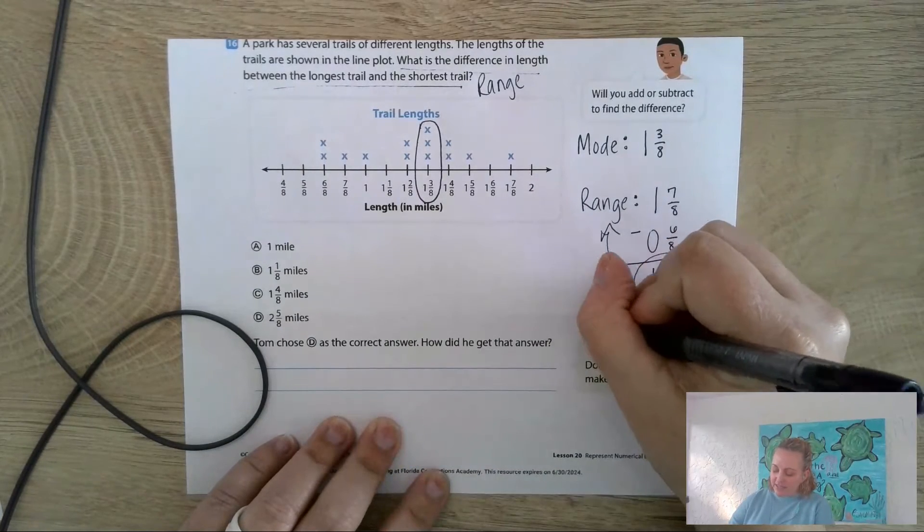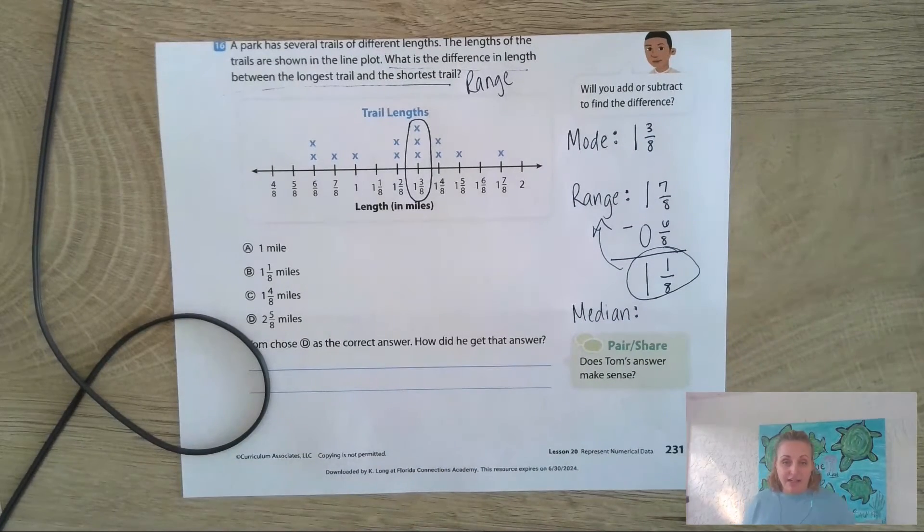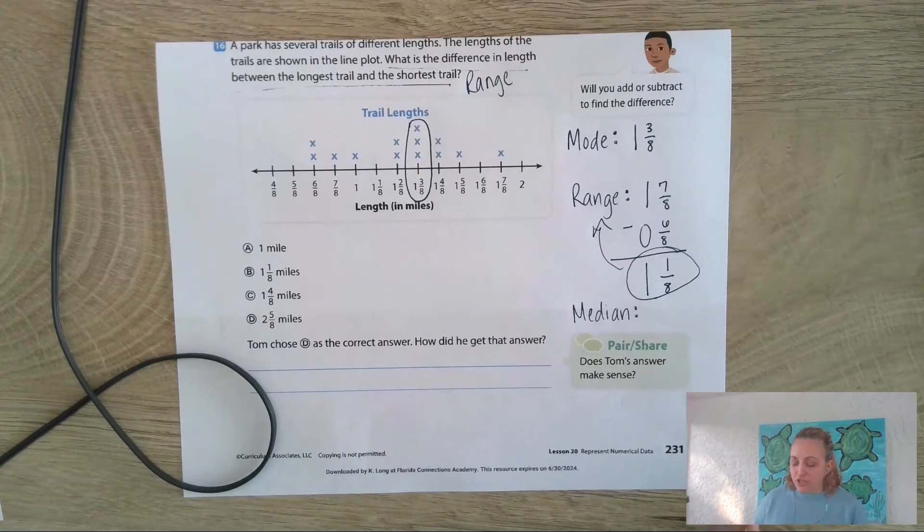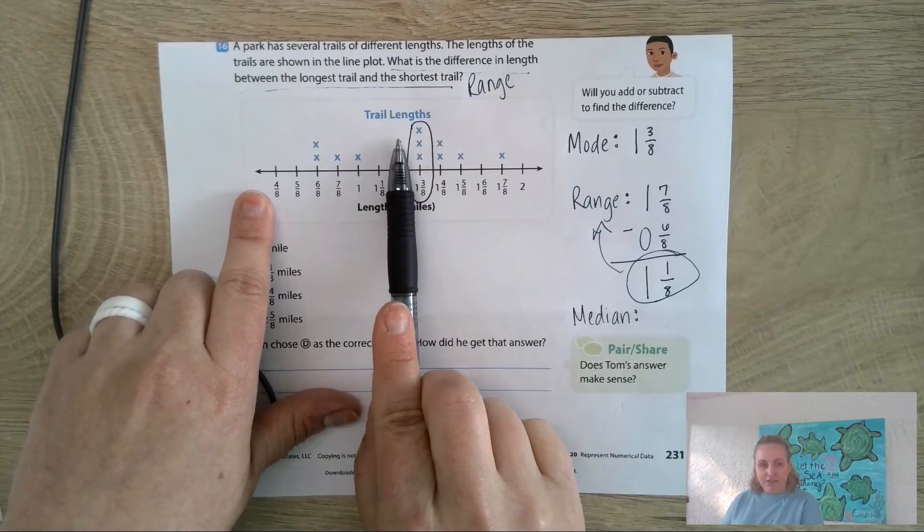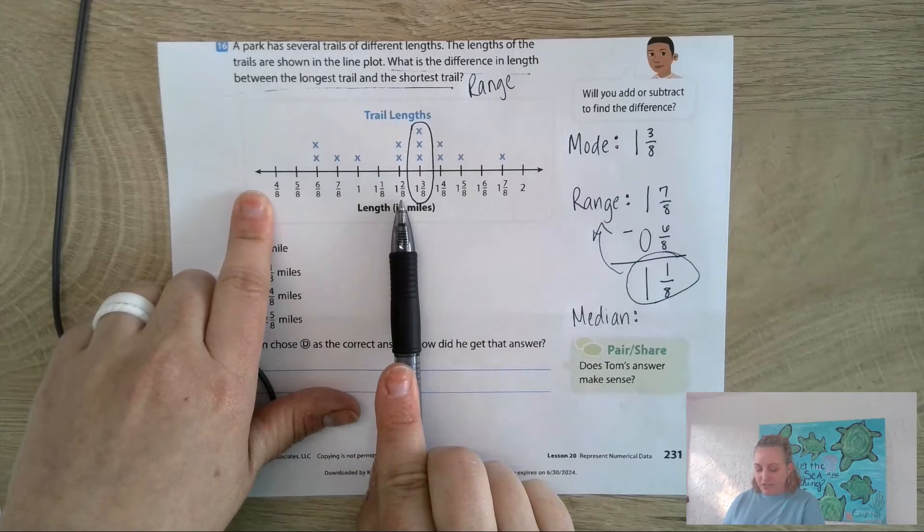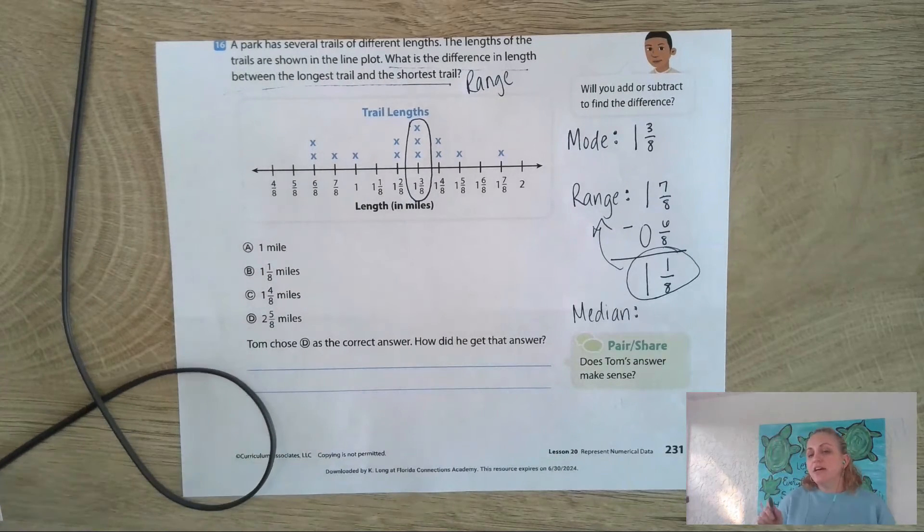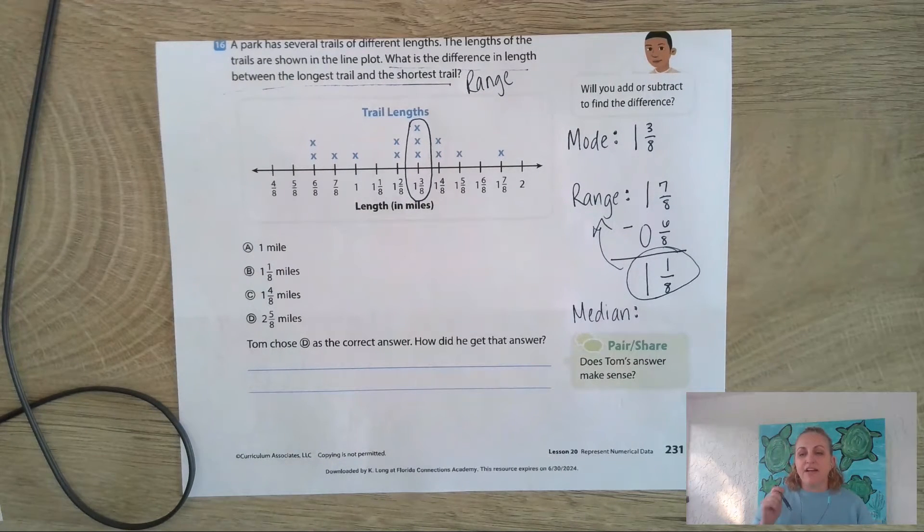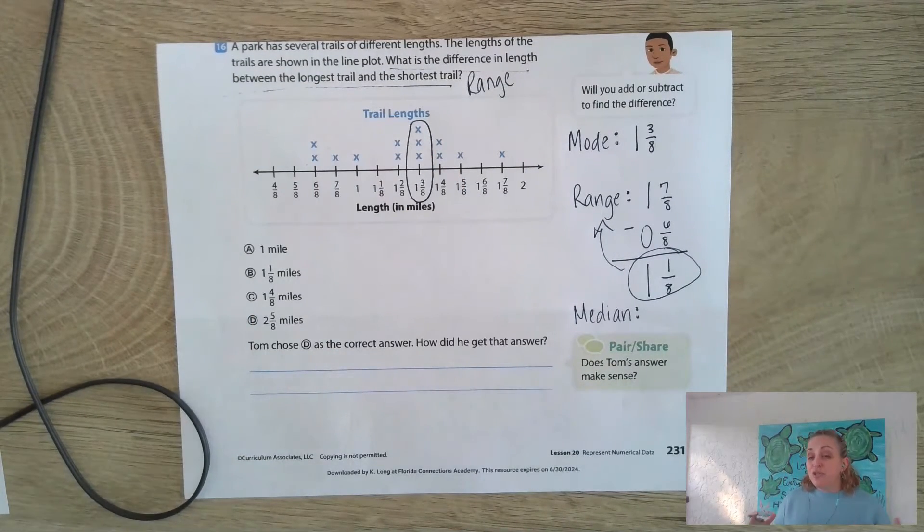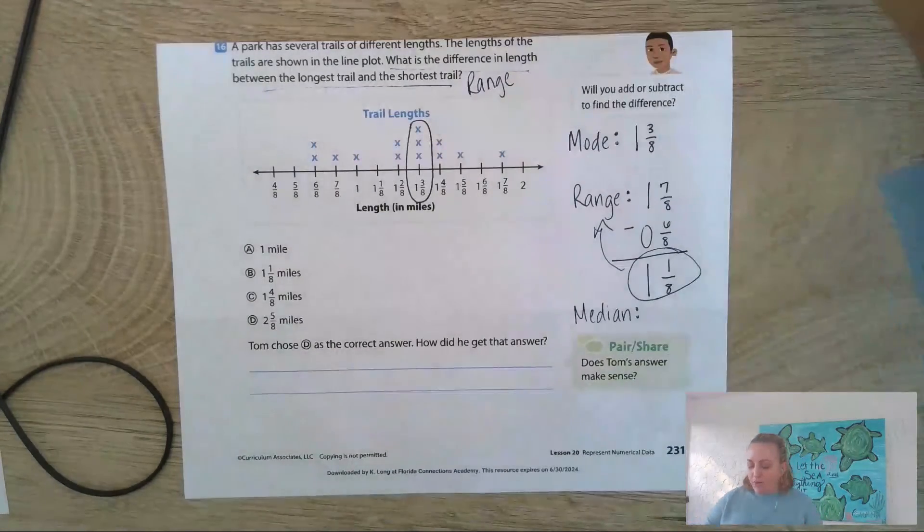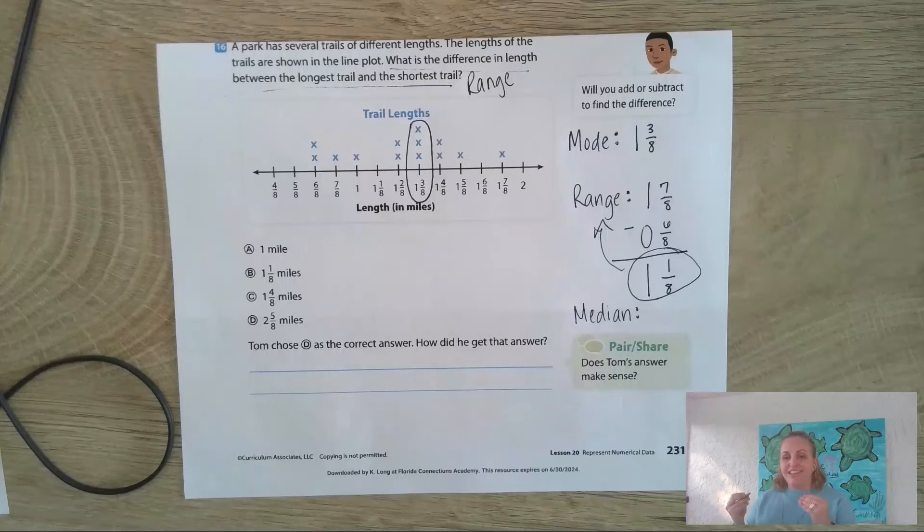Now the median - this is the trickiest thing to find on a line plot because what I see students do is they look for the middle of the line plot. In this case, 1 and 2/8 looks like it's right in the middle of the line plot, but remember it's not the median of the line plot, it's the median of the data. The X's are the data, so we have to cross off 1X, 1X, 1X to find the X that's in the middle.